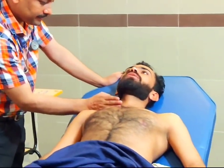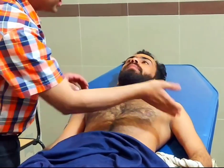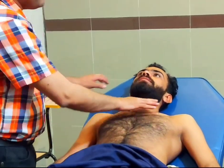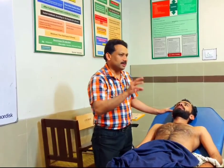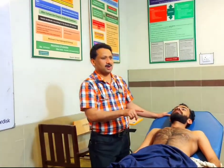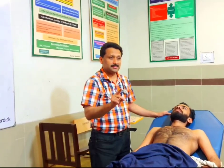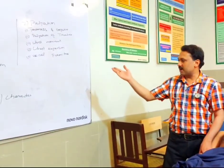Ask the patient to say '99' or any word that produces a resonant sound. Check vocal fremitus over all chest areas, and never forget the axillas. If you have been asked to examine the chest fully, there is no separate need to check vocal fremitus during palpation if you will do vocal resonance during auscultation. However, if asked only to palpate the chest, vocal fremitus must always be checked.